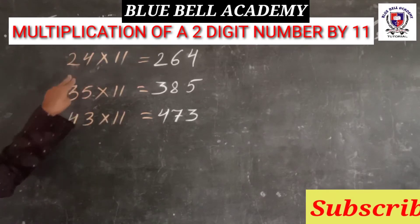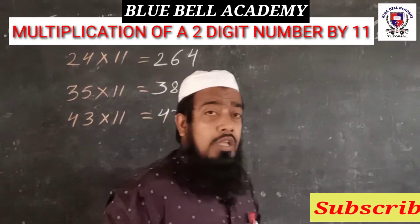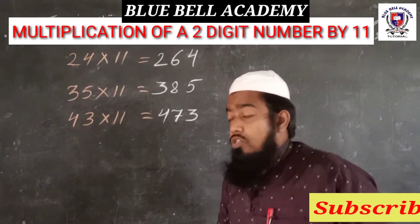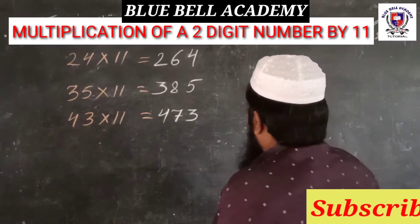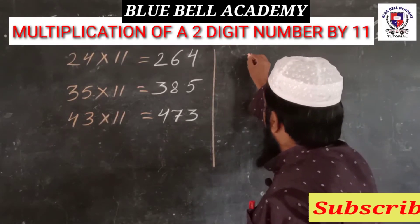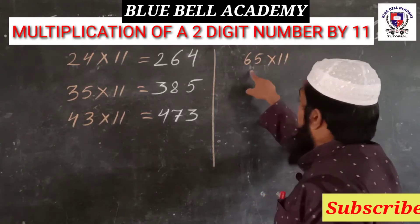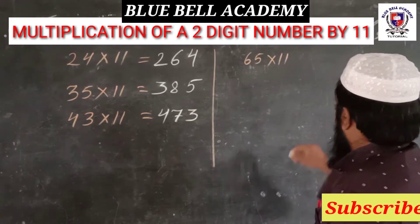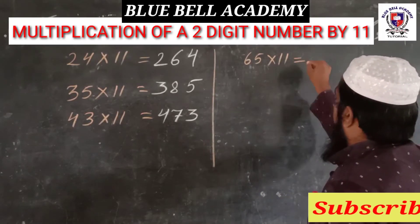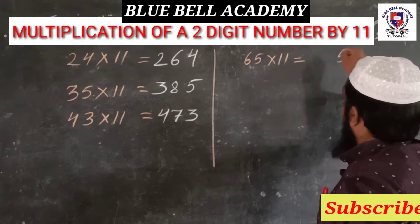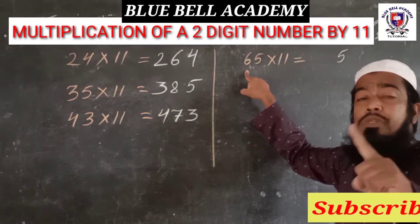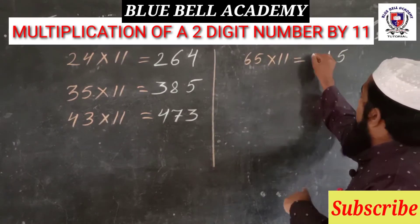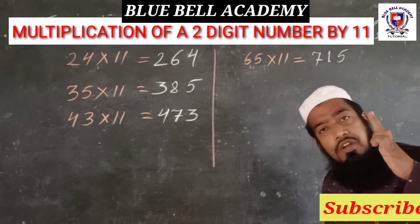Now let's see what happens when the sum of the two digits is more than 10. For example, 65 into 11: the sum of 6 plus 5 is 11, which is more than 10. First write 5, then 6 plus 5 is 11, so write 1 and carry the 1. Then 6 plus 1 is 7. So your answer is 715.